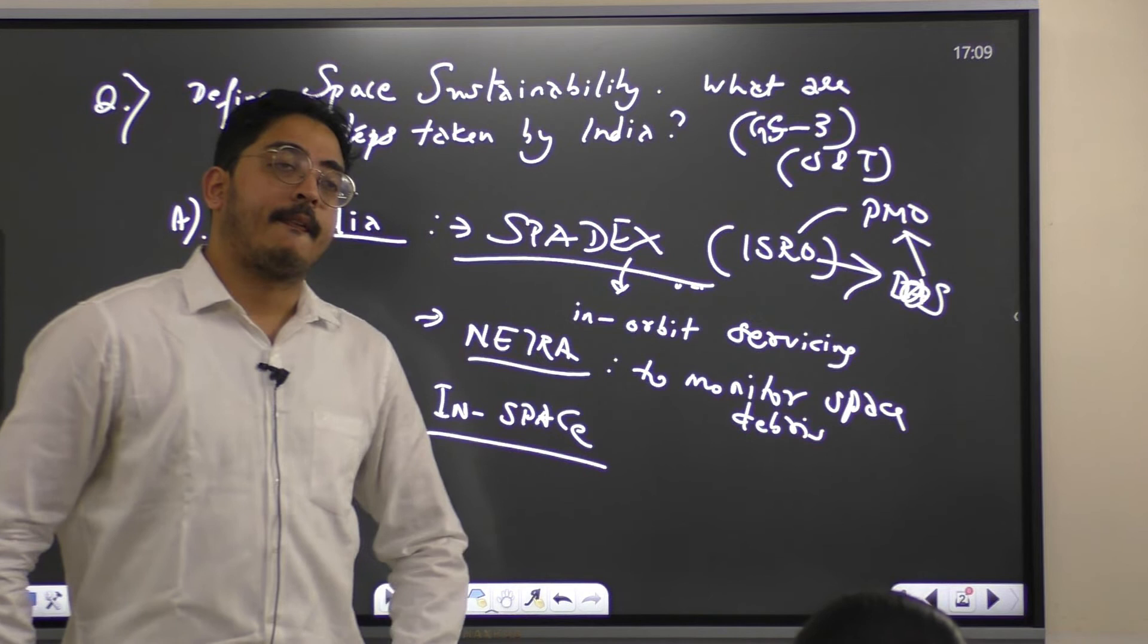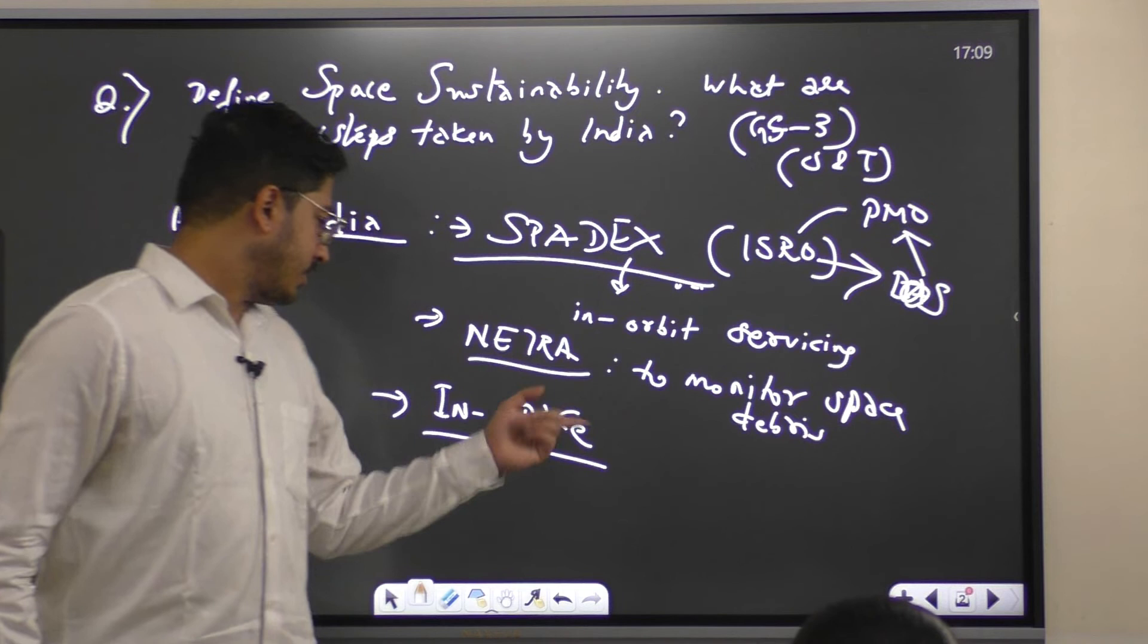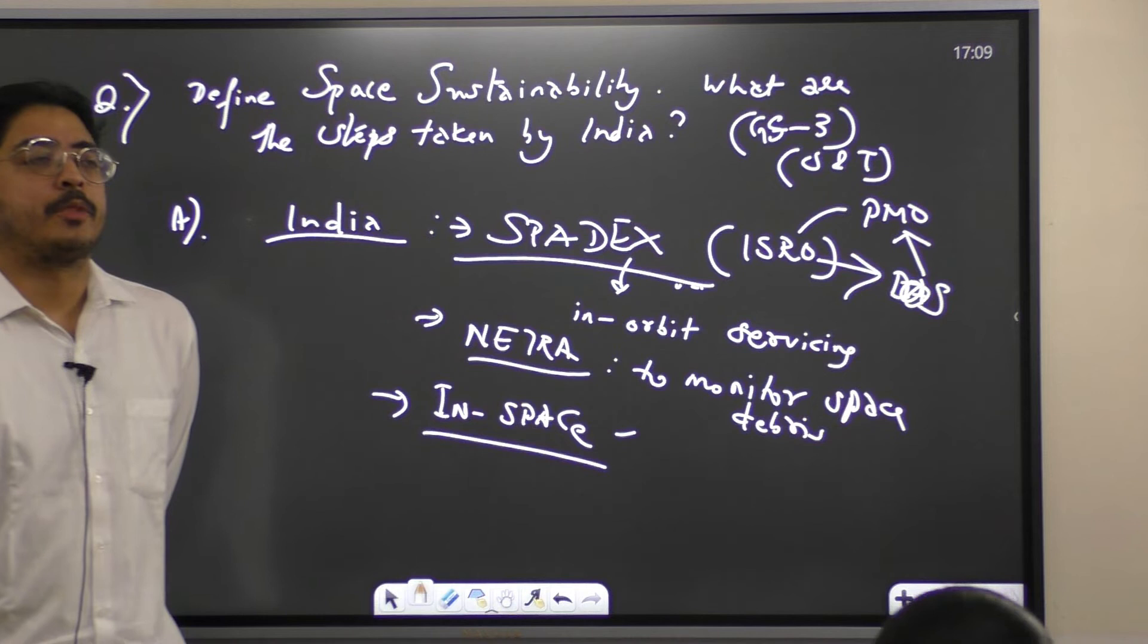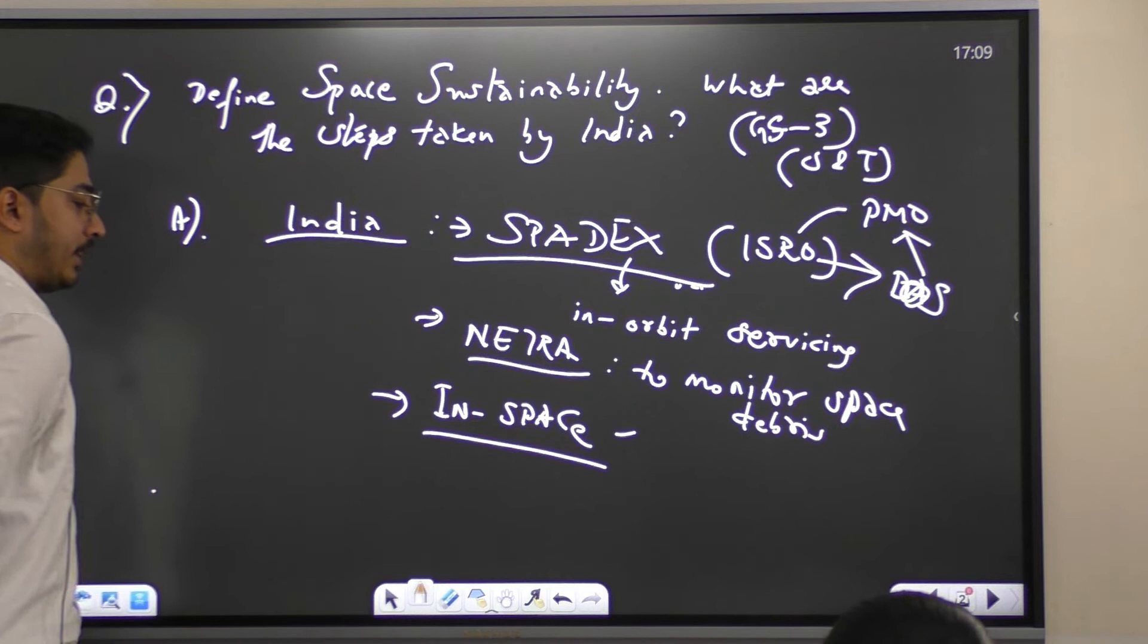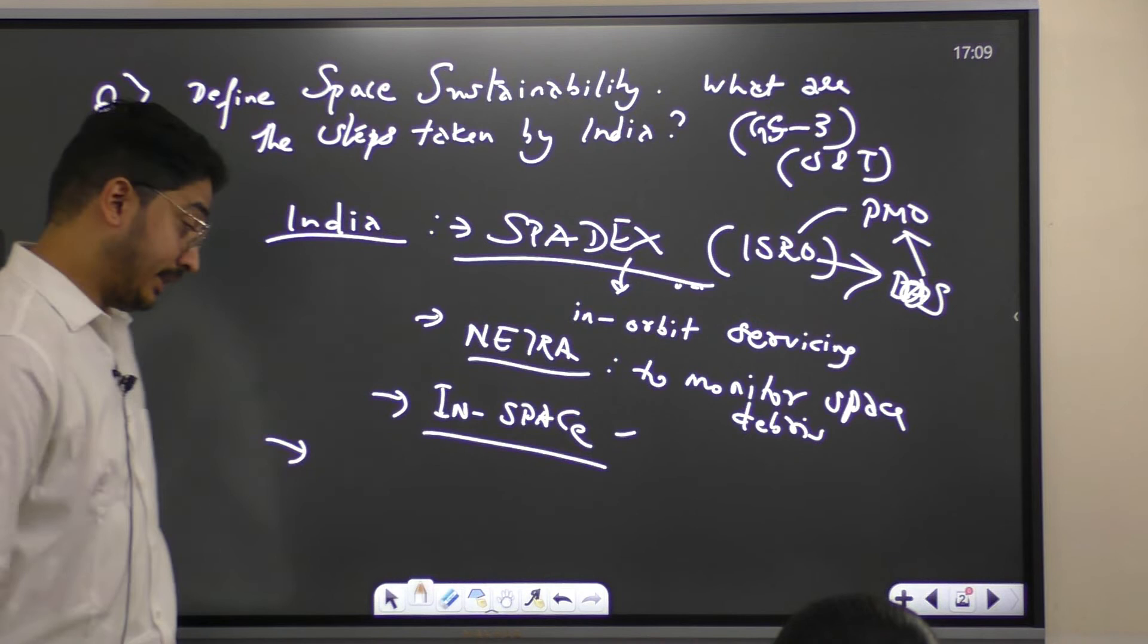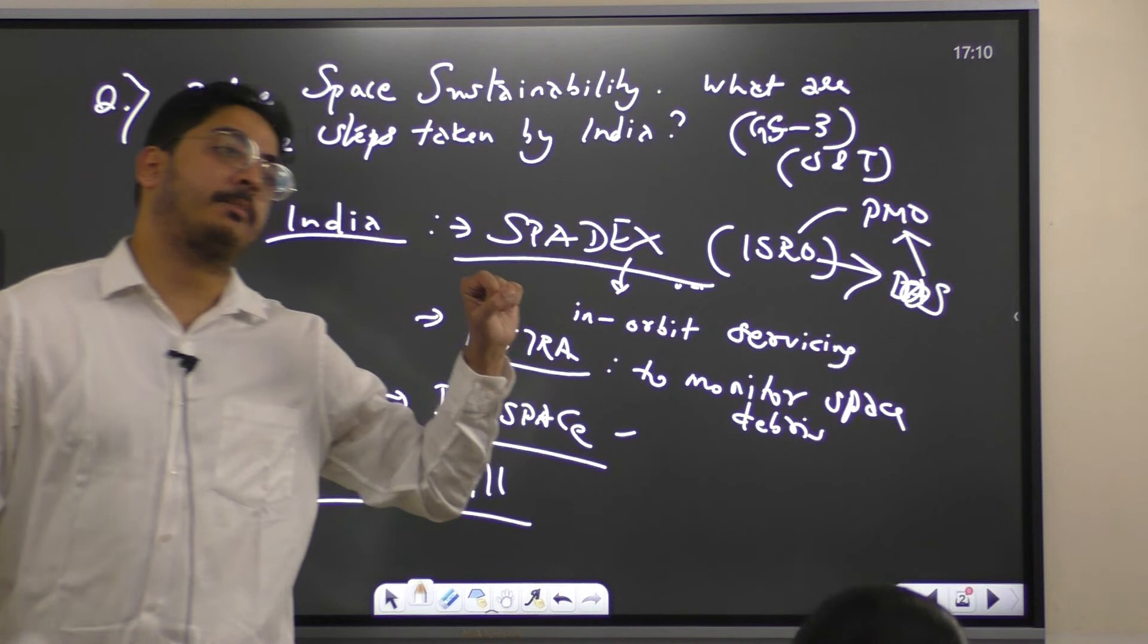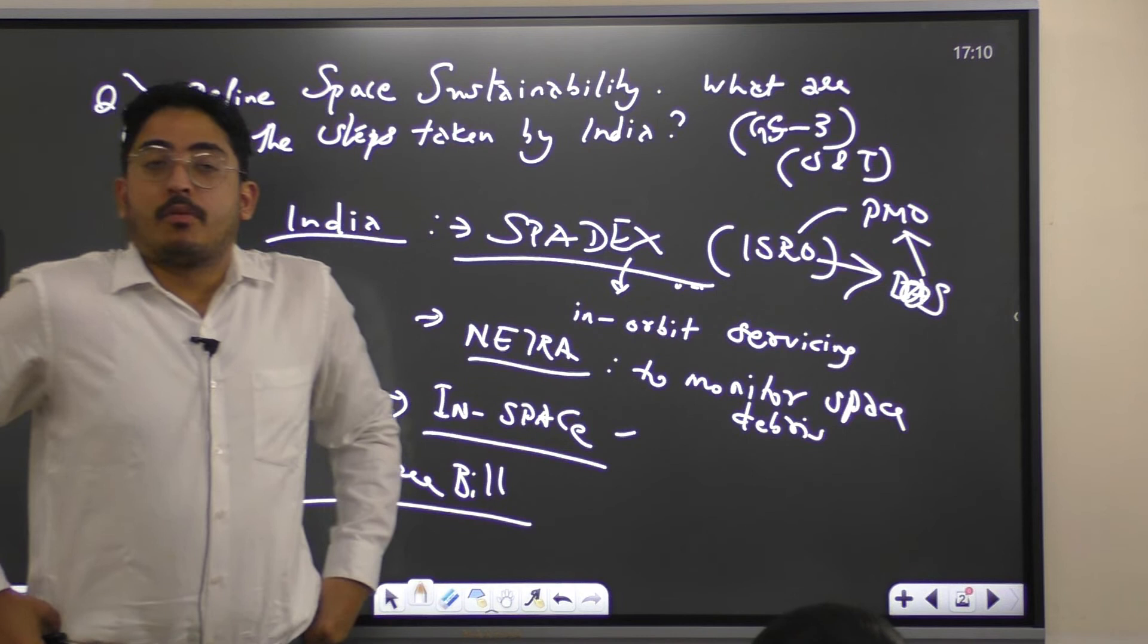Write the full form also. Indian Space Promotion and Authorization Center. It was recently inaugurated. Here private can also play a very big part now. Extra point you can write: recently there is a Space Bill, 2019. India has brought where private sector participation they have given. Obviously under government control, but private sector can also participate.